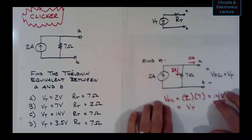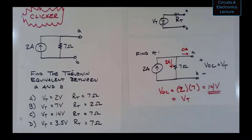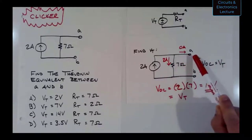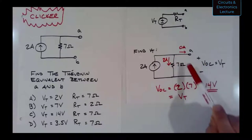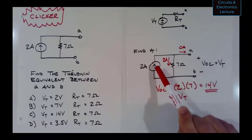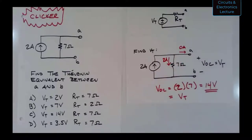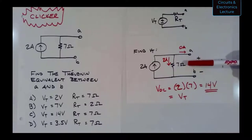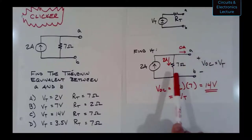Here is how I solved for VT. I'm finding the open circuit voltage at terminals A and B, with polarity VOC, which equals VT. The terminals with nothing connected have zero amps coming out. So all two amps from the source go down through the seven-ohm resistor. VOC is the voltage between nodes A and B — also the voltage across the seven-ohm resistor. So VOC equals two amps times seven ohms, which is 14 volts. That's VT.